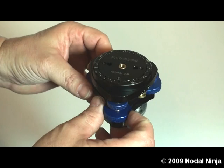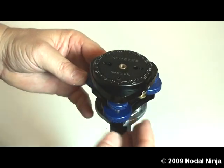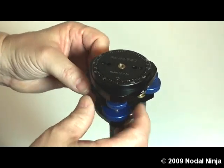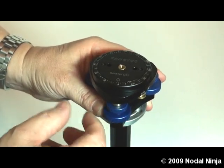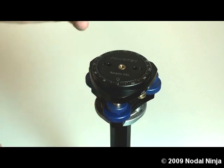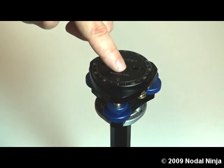On the Easy Leveler portion, we have three large knurled knobs which help you fine-tune your level, and a set knob to help you remember that level. On the top, we have the Rotator D3.